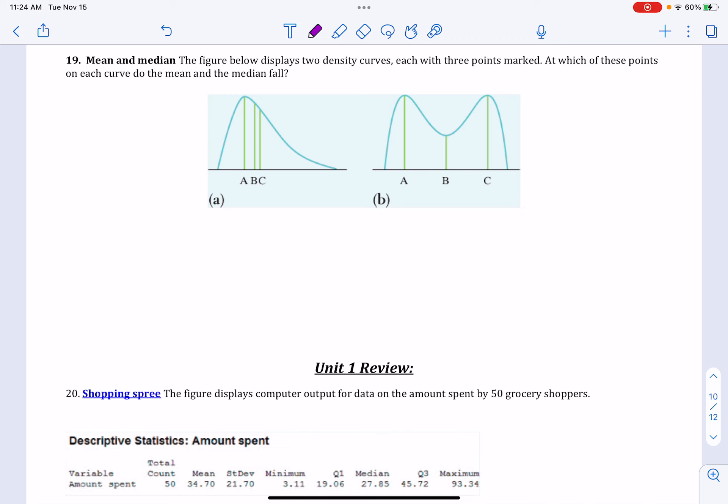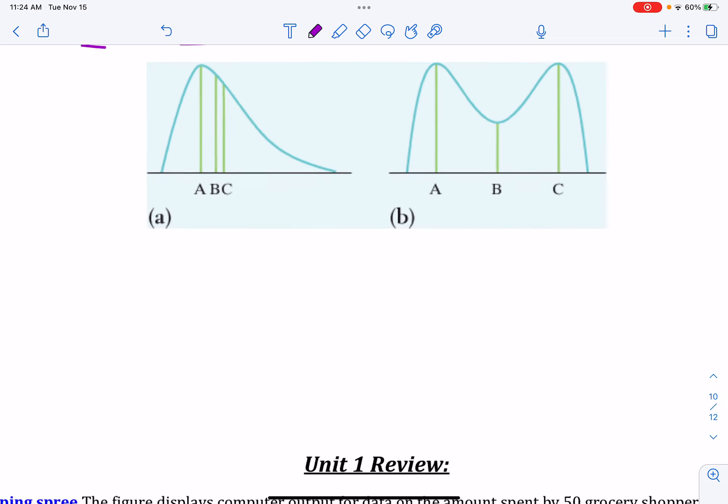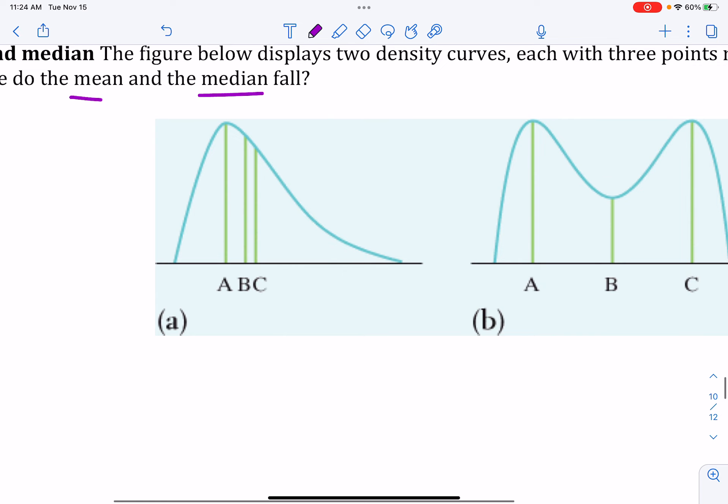So for mean and median, the figure below displays two density curves. Each of them has three points marked. So again, mean is usually going to go toward the tail in a skewed distribution, which this is.